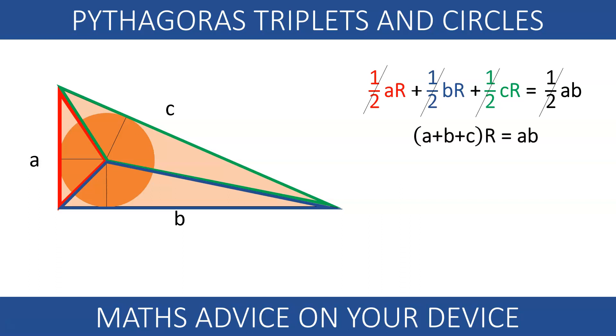Canceling the fractions, we can see that the radius is the quotient between the product of the short sides and the sum of the three sides of our triplet.